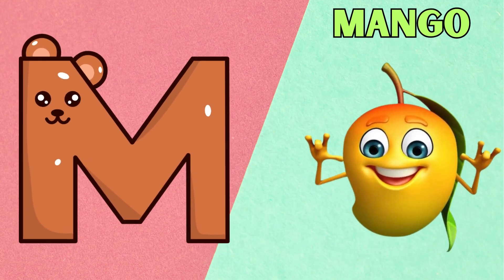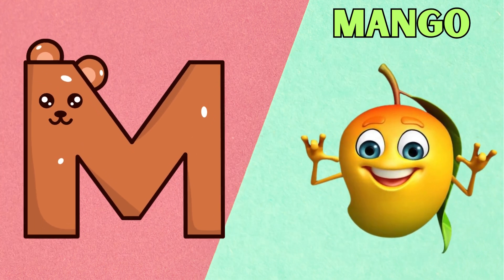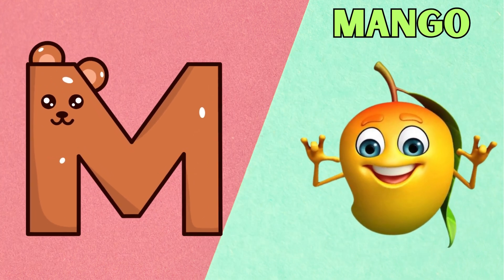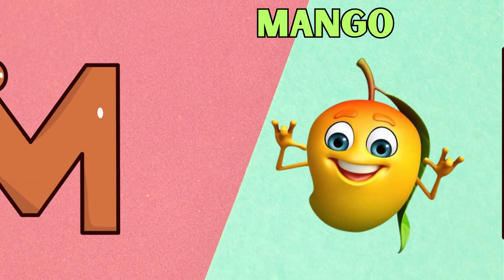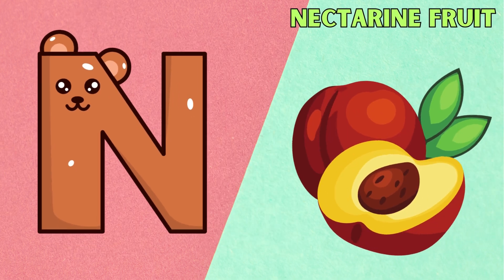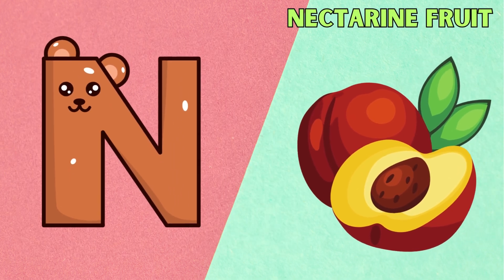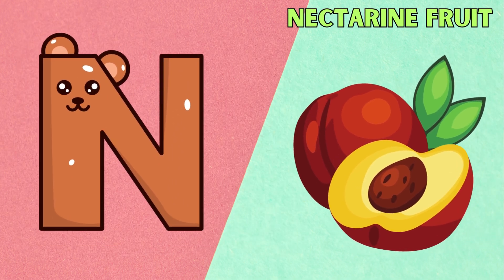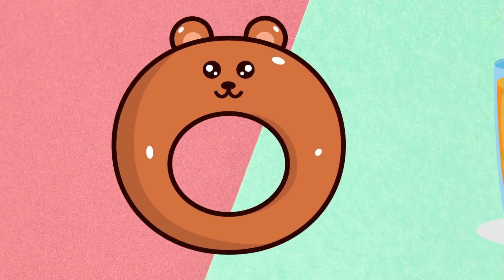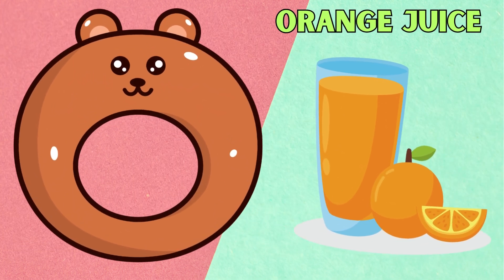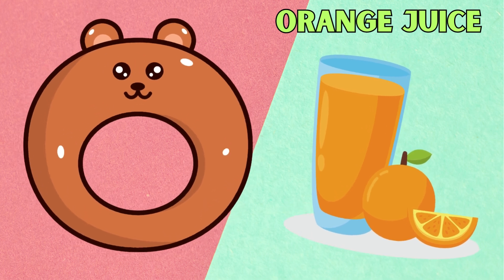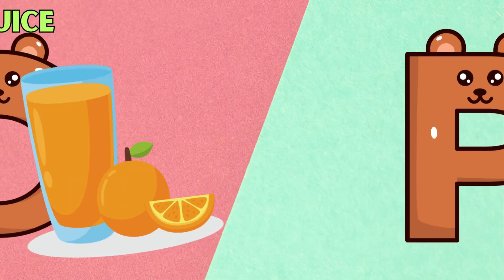M is for Mango. M, M, Mango. N is for Nectarine Fruit. N, N, Nectarine Fruit. O is for Oranges. O, O, Oranges.